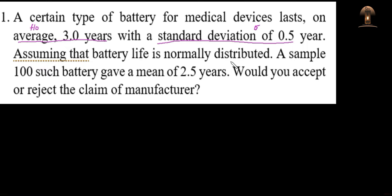With a standard deviation — the population standard deviation is also known — that is 0.5. So sigma is known, equal to 0.5. Assuming that battery life is normally distributed, a sample of 100 batteries — so N equals 100 — gave a mean of 2.5. That is your sample mean, X-bar equals 2.5. Would you accept or reject the claim of the manufacturer? There is no information about what the alternative hypothesis should be, so we simply choose whether H0 is true or not.